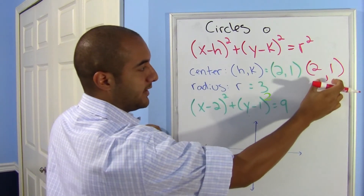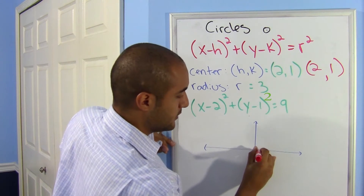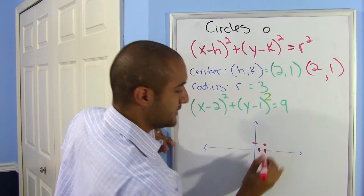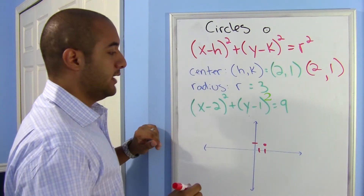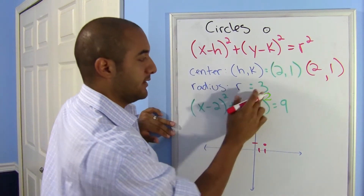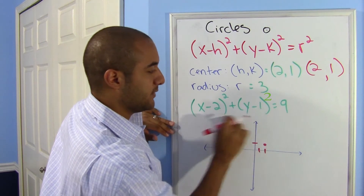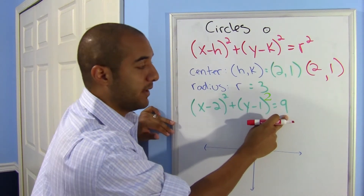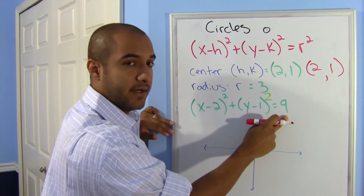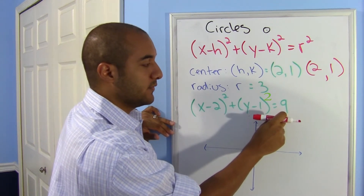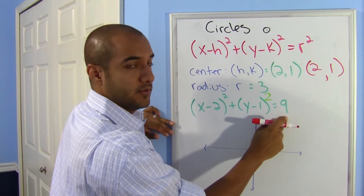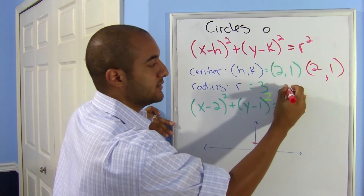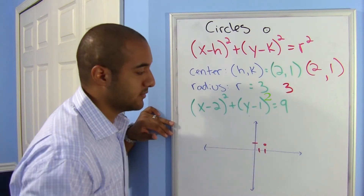So I'm going to find the point 2, 1 — that's my center of the circle. Now I want to find the radius. Some people make the mistake of saying the radius is 9, but it's not. You need to take the square root of 9 because remember, this was already squared. So to find what it was originally, you take the square root of 9, which is 3. So my radius is 3.